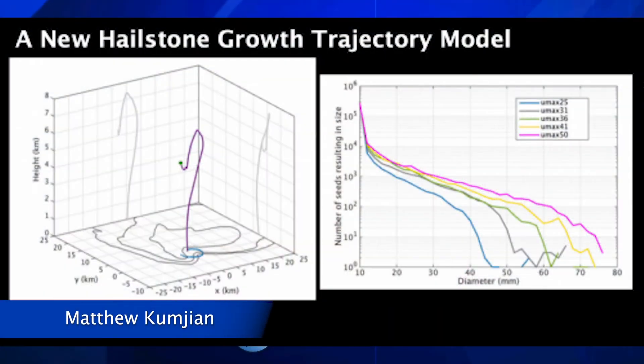There are still limitations of understanding in the field of cloud microphysics, but the science community has the tools to continue making progress. It's a nice time to be in this field because we have new tools like dual polarization radars and advanced satellites that are going to help us make significant progress moving forward. Cloud microphysics processes are small in scale, but their implications to weather and forecasting, climate, and research are big in scale.